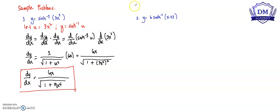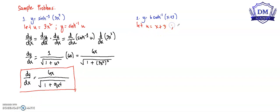Next problem: our function y is equal to 6 times the inverse hyperbolic sine of (x plus 3). Let u be equal to x plus 3, so our function y becomes y equal to 6 times the inverse hyperbolic sine of u.